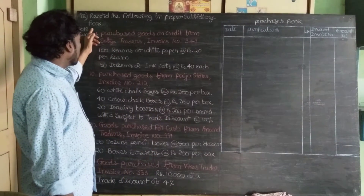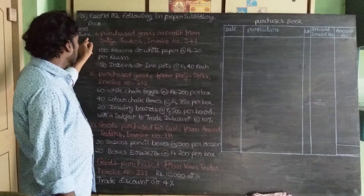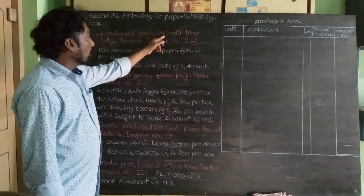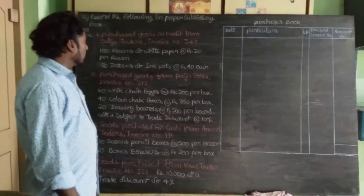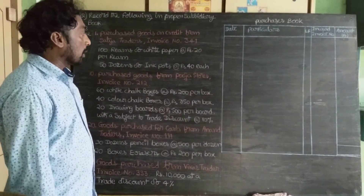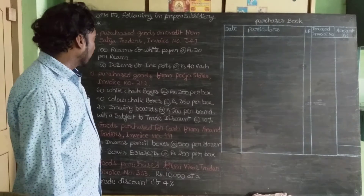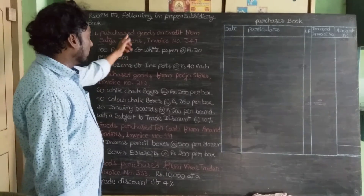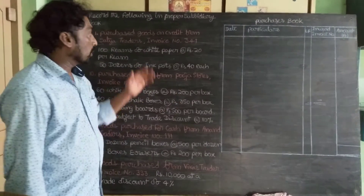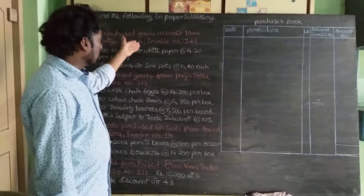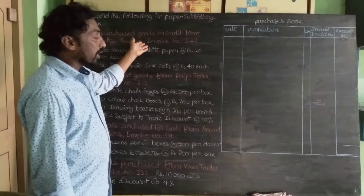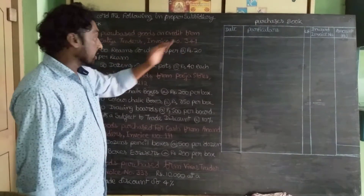It depends on the question. For 2018 June 1st: purchased goods on credit from Satya Traders, invoice number 341. Since it says 'purchase goods on credit,' this transaction is related to and recorded in the purchase book.